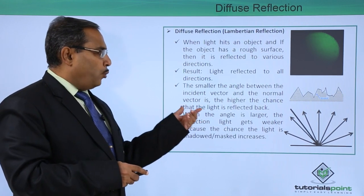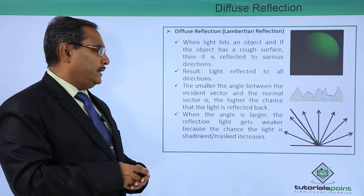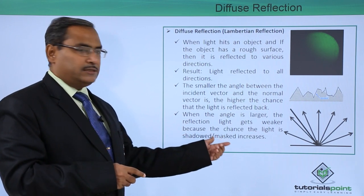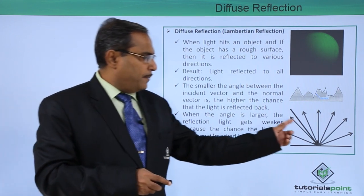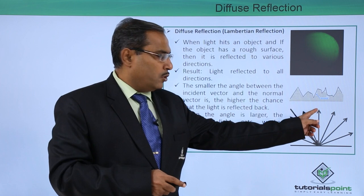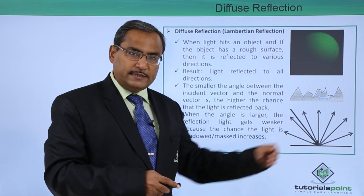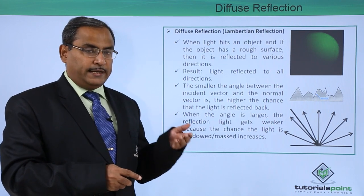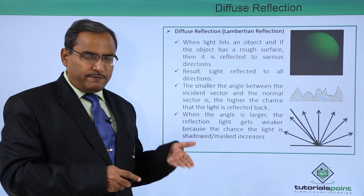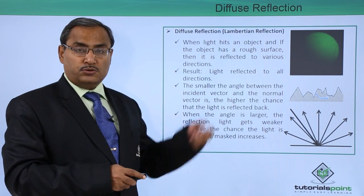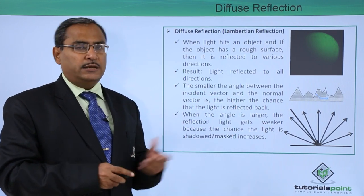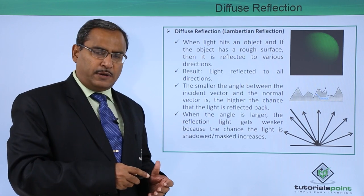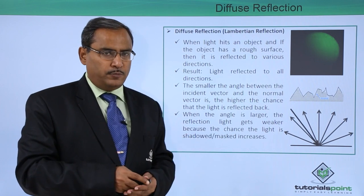When the angle is larger, the reflected light gets weaker because the chance that the light is shadowed and masked increases. If the angle of incidence is smaller, the probability is high that most of the light will be reflected back toward the source. If the angle is larger, then obviously the probability — the percentage of light reflected back — will be less.